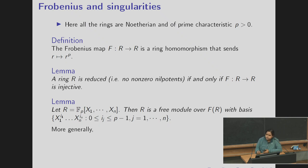Next we see what Frobenius does on polynomial rings. If R is a polynomial ring on fp where fp is a field of p elements, then R is a free module over FR with basis x1 to the power i1 dot dot dot xn to the power in where each ij's are between 0 to p minus 1.